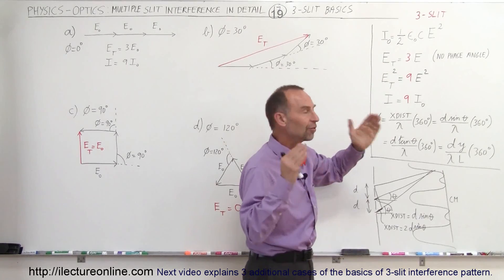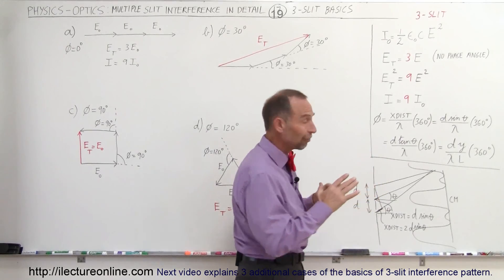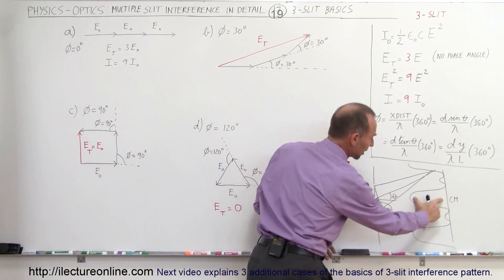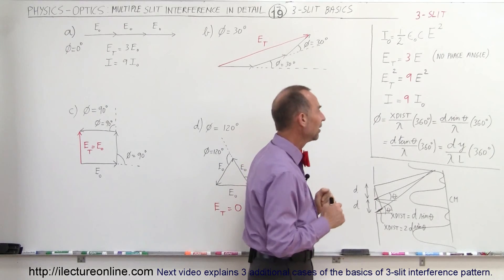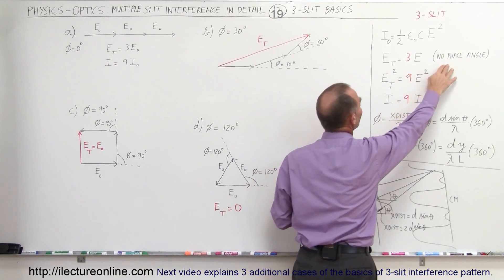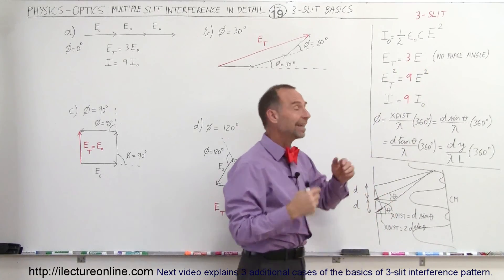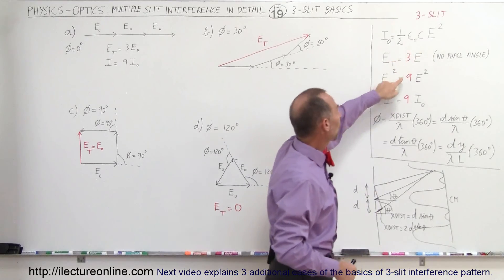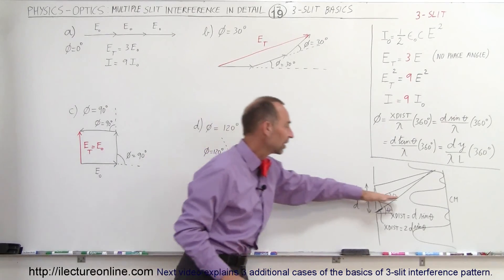Notice that the total electric field strength is going to be three times the individual electric field strength — that is, of course, if there's no phase angle. If there's no phase angle, when we're looking straight ahead, we get the central maximum. We then notice that the intensity of that central maximum will be nine times the intensity of a single wave. The reason for that is that the total electric field is three times the electric field of a single wave, and since intensity is proportional to the electric field squared, when we square 3E we get 9E². Therefore, intensity is nine times the intensity of a single slit.